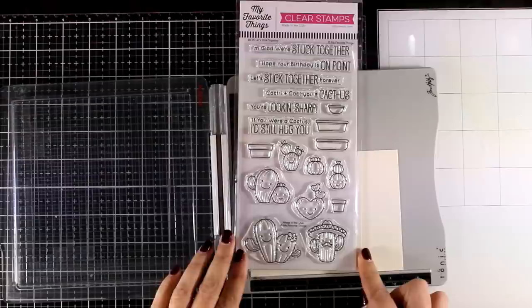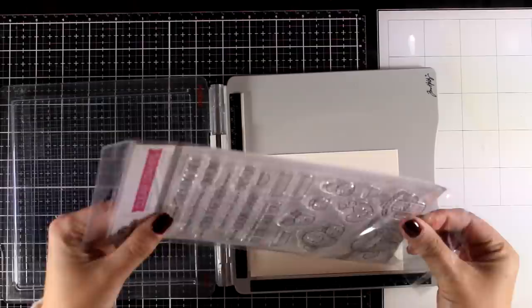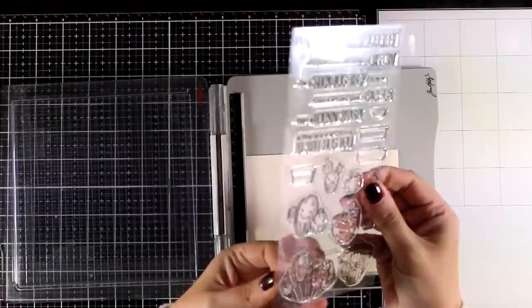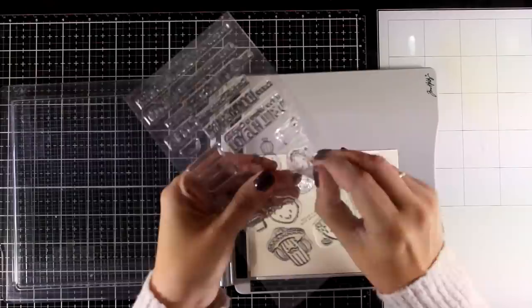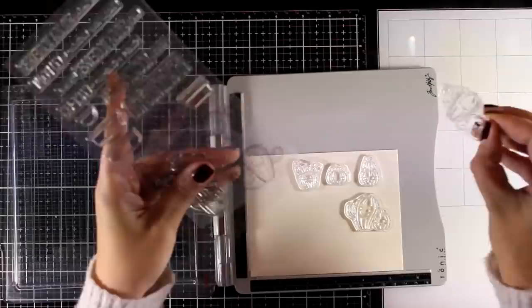For my focal point I will be using images from this adorable stamp set. This is called Let's Stick Together and it is by My Favorite Things. I do get lots of stamps throughout the month and I usually make cards but I get so many requests on making an art journal and today I decided to show you how you can use the stamps that you probably have on your stash to create art journals. Just remember that stamps for card making can be easily turned into an art journal.